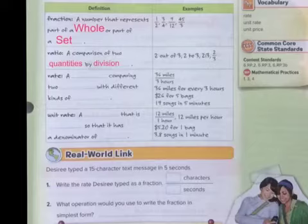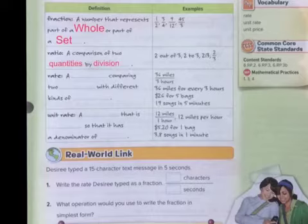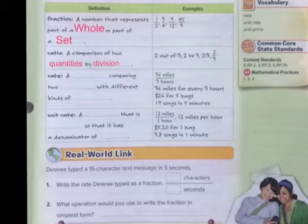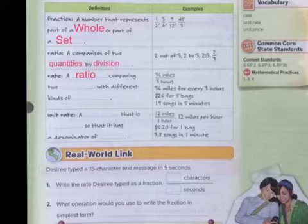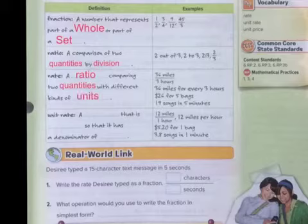We might be comparing feet per second. So we're comparing distances with time. We might be comparing apples to days. How many apples do you eat per day? So it's two different types of units. So it is a ratio comparing two quantities with different kinds of units.